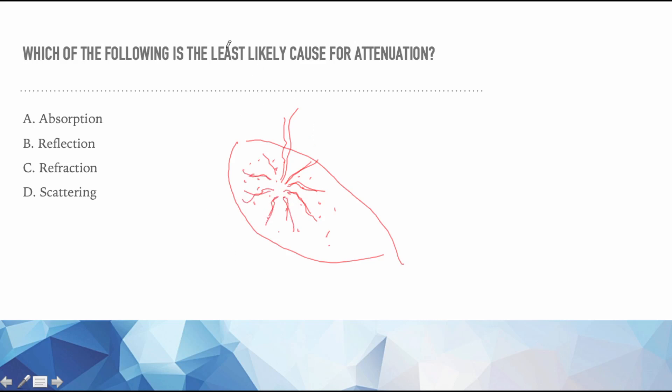So when we think about which one of these is the least likely cause for attenuation - remember we're most worried about the least. What will happen if we send a beam into the body? Absorption will happen. It's going to interact with the tissue and heat it up. That's a fact. It's so minuscule - it's not a lot but it will happen. Reflection will happen. If it didn't then that means the beam's traveling straight on through the body and never coming back. Nope, reflection will happen 100% of the time.